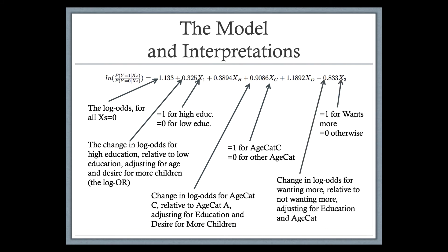The final coefficient x3 equals 1 if they want more kids and 0 if they don't. The coefficient is negative 0.833, telling us how the log odds of using contraceptives change if a woman does not want more kids. Exponentiating gives the odds ratio.